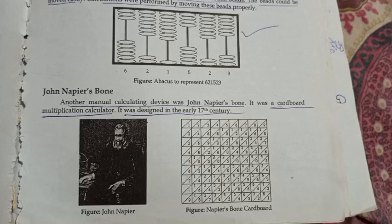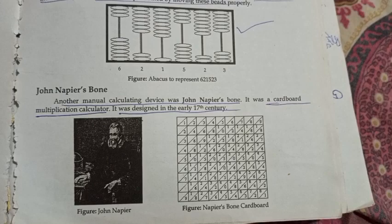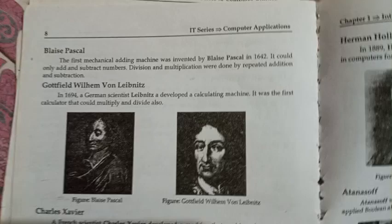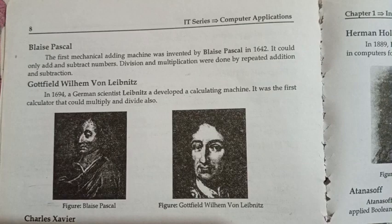Another manual calculating device was Johann Napier's Bones. It was a cardboard manipulation calculator designed in the early 17th century. The first mechanical adding machine was invented by Blaise Pascal in 1642.